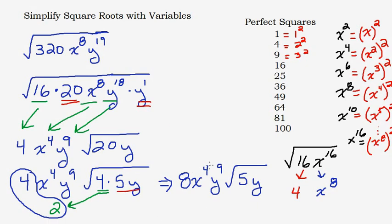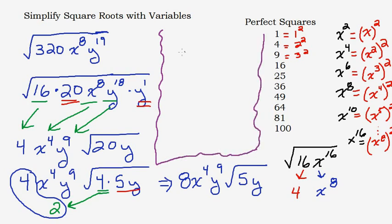The 4 is a perfect square and comes out as 2, while the 5 and remaining y stay inside the square root. Multiply the 4 already outside by this new 2 to get 8. The final answer is 8x to the fourth y to the ninth times the square root of 5y. The 5 is prime so it has no perfect square factors, and y is to the first power so nothing can be done with it.